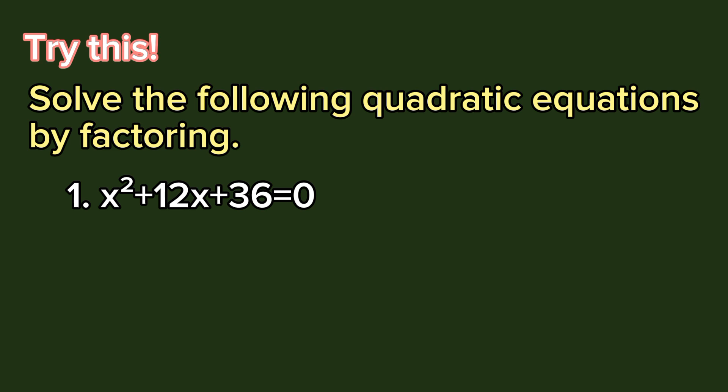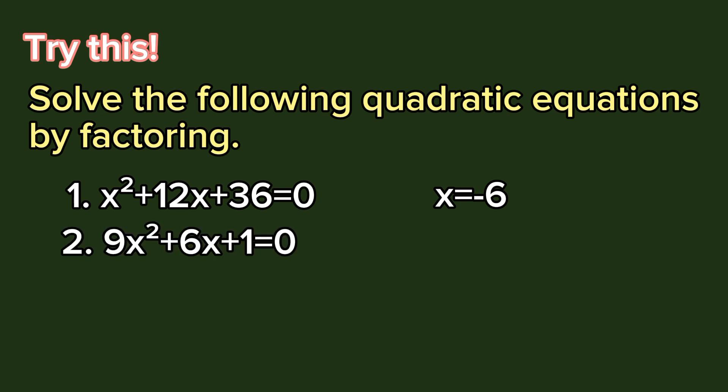Solution: x = -6. Number 2: 9x² + 6x + 1 = 0. Solution: x = -1/3.